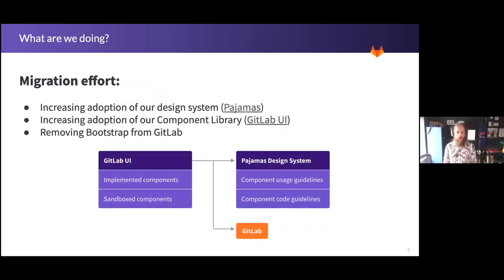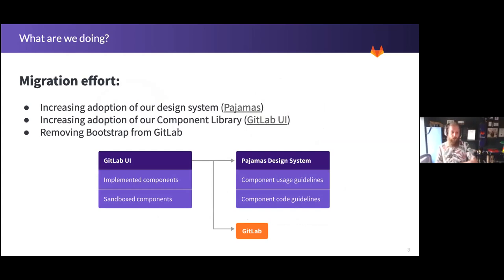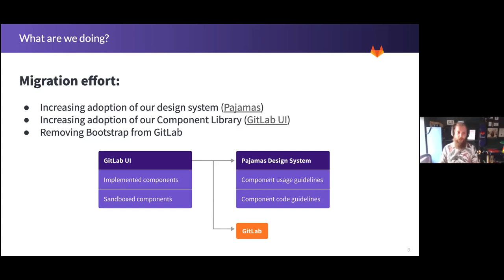So very quickly, just a little bit about what we're doing. This is a joint effort with UX and engineering. We want to increase adoption of our design systems — that's Pajamas, that's design.gitlab.com. This is the UX side of things with component usage and code guidelines. We're hoping to do this by increasing adoption of our component library, GitLab UI. The theory is: if we increase adoption of GitLab UI, we increase adoption of our design system.